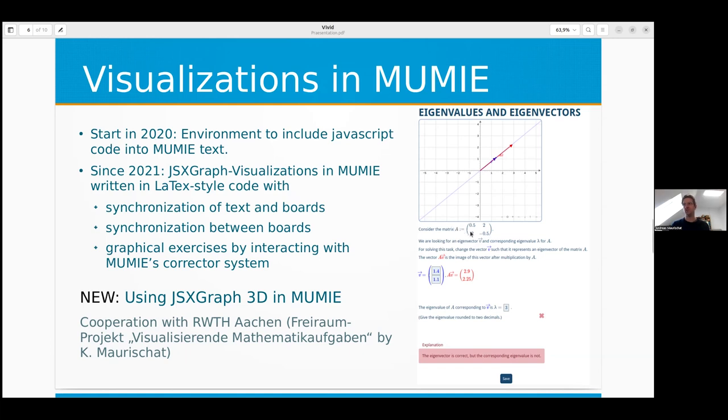We made a connection between the graphics and our corrector system, so you can easily write graphical exercises. Like the screenshot I have here on the right side, where the student has to put the arrow in the right place so it's kind of an eigenvector. Blue is the original vector, in red you have the image under the linear transformation, and then it corrects what the student did there. We saw JSXGraph is developing 3D, and we were looking really for 3D, so we integrated JSXGraph 3D into Mumia.